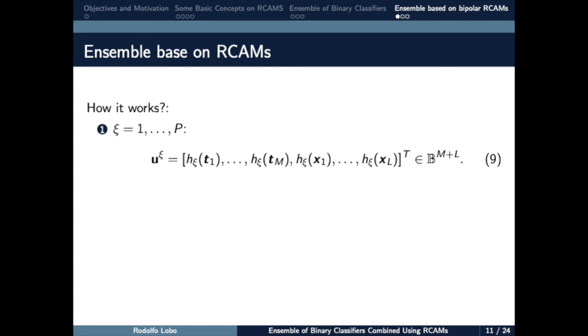The bipolar RCAM is synthesized using the fundamental memory set U, and it is initialized at the state vector Z0. Note that the first M components of initial state Z0 correspond to the targets in the training set T. The last L components of Z0 are 0, a neutral element different from the class labels.